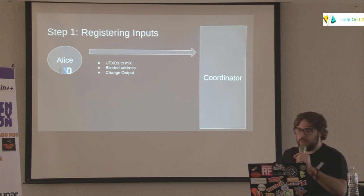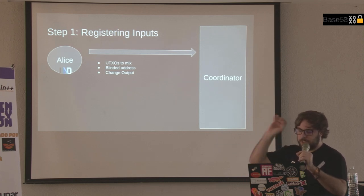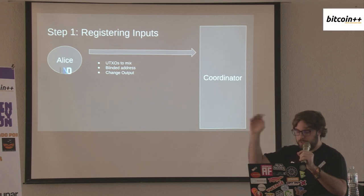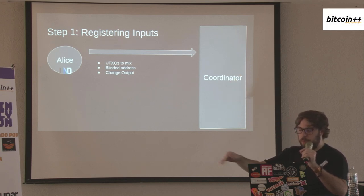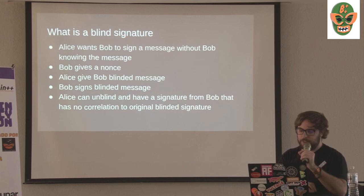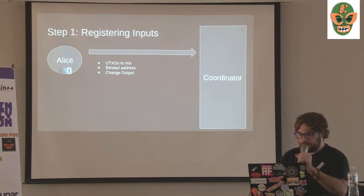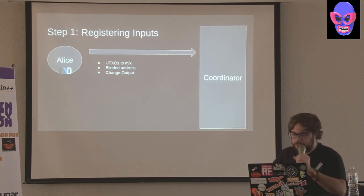First, we register inputs. Alice wants to do a coin join, so she says here are my inputs — she'll be spending these UTXOs. Where she wants to send the money will be blinded, so she blinds that address as the message using the nonce Bob already gave her. Then she gives the change output for the extra stuff.